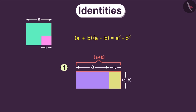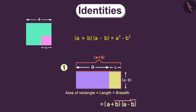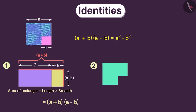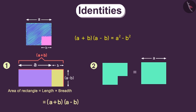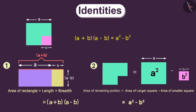We know that the area of a rectangle is equal to its length times its breadth. Therefore, the area of this rectangle will be a plus b multiplied by a minus b. So, we get the area of this remaining portion to be this. There is another way to find this area. This area is actually equal to the area of the larger square minus the area of the smaller square. The area of the larger square will be a square and the area of the smaller square will be b square. Therefore, the area of this remaining portion will be equal to a square minus b square.